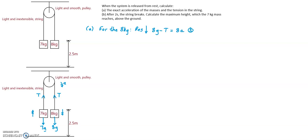Similarly for the 7 kilogram mass, in this case we will be required to resolve upwards, because the 7 kilogram mass is travelling upwards. So the vertical force upwards is T, take away the downward force which is the weight of the 7 kilogram mass, which is 7g, and that's going to equal 7a. That's going to be equation 2.